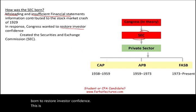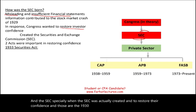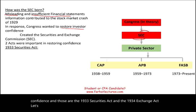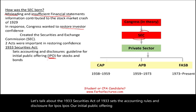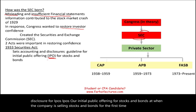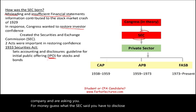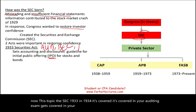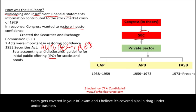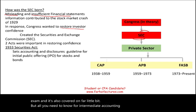The SEC's role is to oversee the financial markets. There are two important acts: the 1933 Securities Act and the 1934 Exchange Act. The 1933 Act sets the accounting rules and disclosure requirements for IPOs — initial public offerings for stocks and bonds. This is when a company is selling stocks and bonds for the first time, and the SEC requires disclosure of certain information. For intermediate accounting, all you need to know is that the 1933 Act oversees initial public offerings.